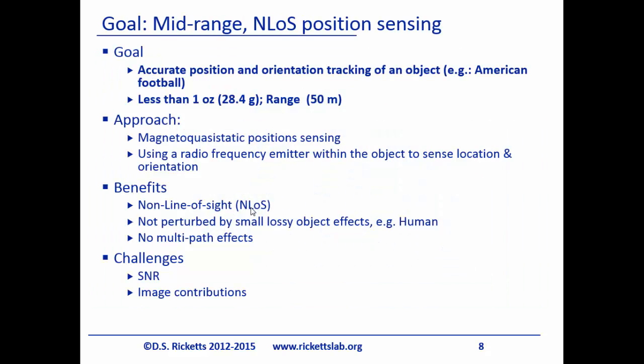If it were an electric field it would actually interact with all the players and be blocked — propagating waves generally aren't propagating through players because the electric field gets absorbed inside them. Our goal was to develop an accurate position and orientation system that needed to be less than an ounce — that's the variation in an American football — and we wanted a range of 50 meters to cover basically across the field. We're using magneto quasi-statics because people are transparent to magnetic fields and we need a time-varying field to sense anything.